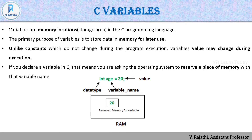In this section, we need to know what is a variable, how to declare a variable, and how to access a variable. Variables are memory locations, which means storage areas in C programming. The primary purpose of variables is to store data in memory for later use. Unlike constants which do not change during execution, variables may change during the execution of a program.